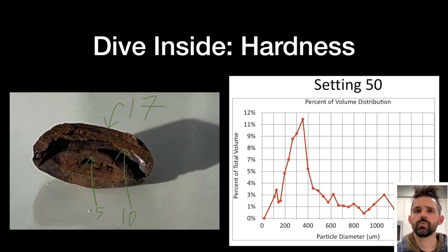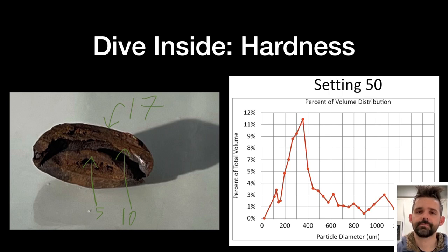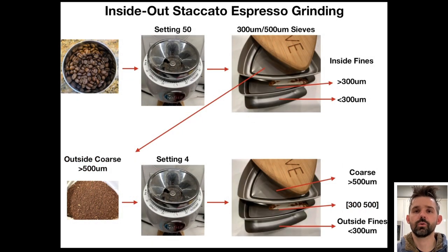So I want to do an experiment to separate out the fines. So my theory is that fines pulverize from the inside, pulverize faster. And so what if I use a coarser grind setting? So I did a setting 50 on the niche. And then I looked at the particle distribution and I said, I could just use a sifter and pull out these finer particles. So I decided to make a more labor intensive shot called the inside out staccato shot, where you grind coarse, sift out these finer particles, and then regrind the coarser particles. And then layer the inside fines, then the outside fines, and then the coarse, and then the mid particles.